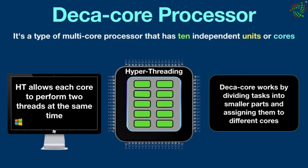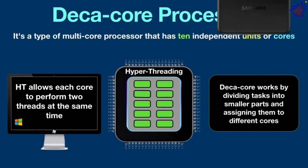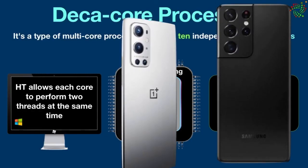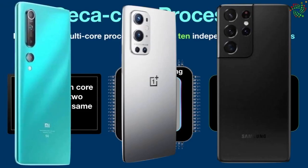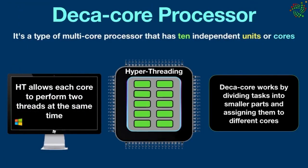Hyper-threading doubles the number of threads that the processor can handle, further increasing the system's efficiency. Deca core processors also consume less power than older CPUs, making them more energy efficient. Some popular smartphones that use deca core processors include the Samsung Galaxy S21, OnePlus 9 Pro, and Xiaomi Mi 10.